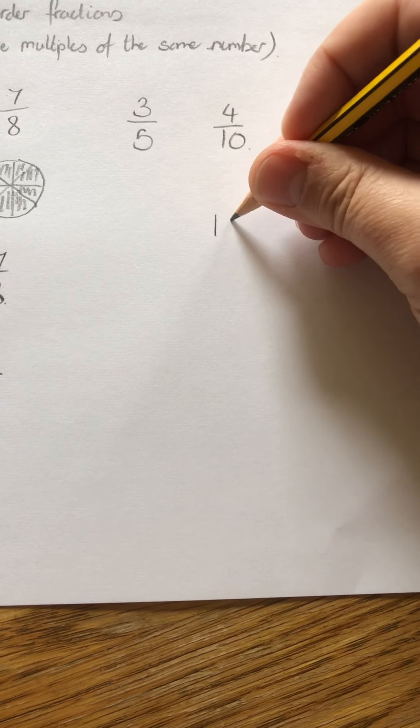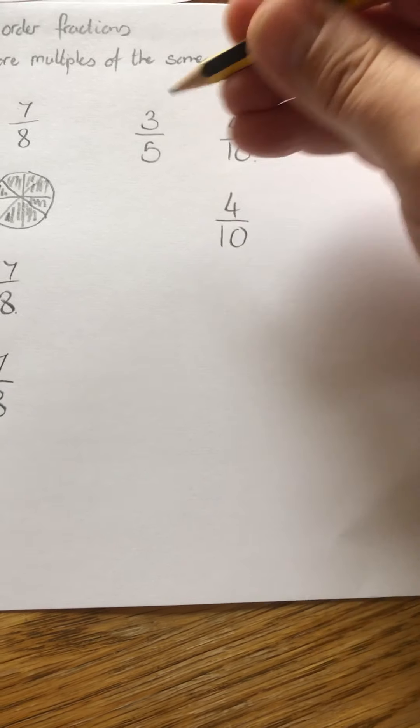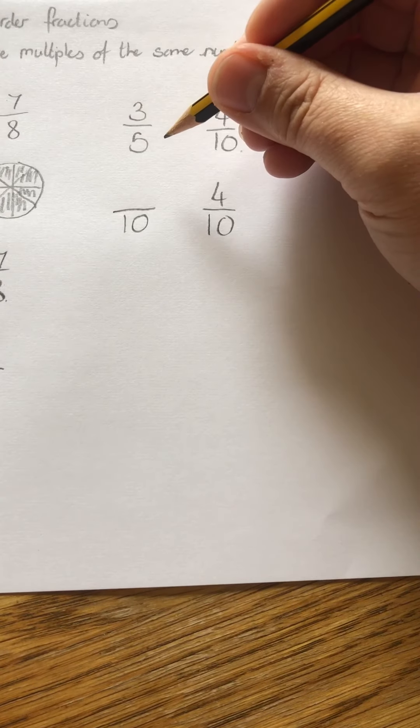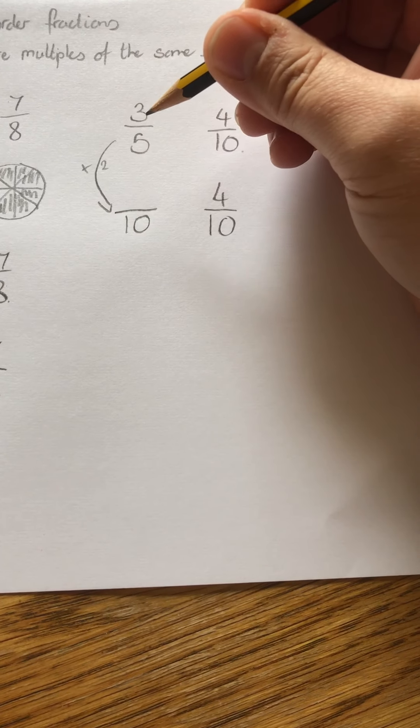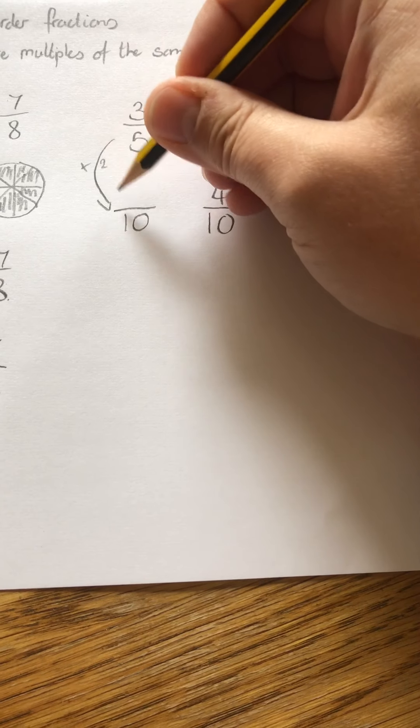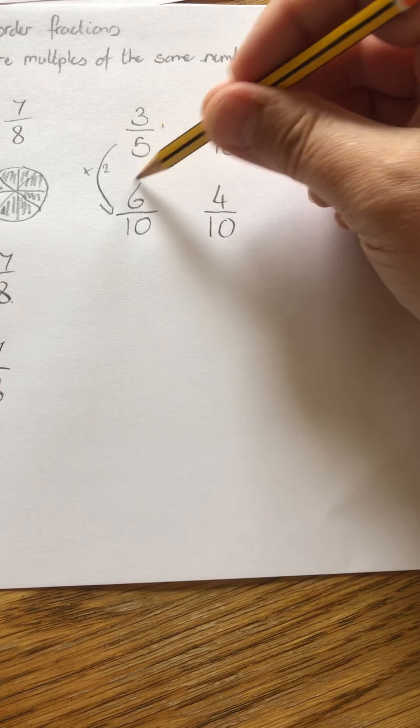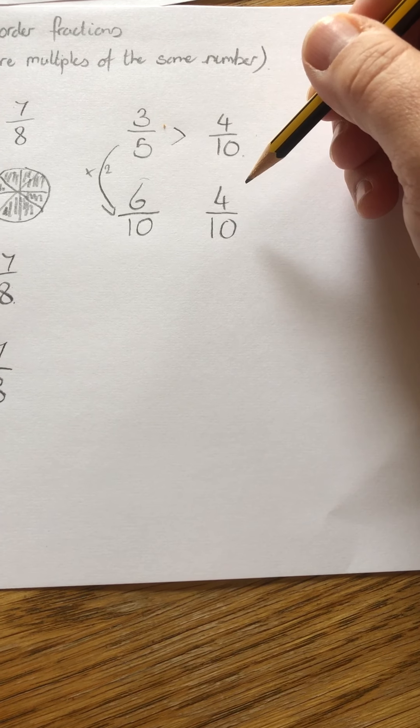So I'm going to keep my tenths because I know that five goes into ten. And then I need to change this fraction into tenths. Five times by two is ten. Three times by two is six. So I can see now that the bigger fraction is this one. Three fifths is bigger than four tenths.